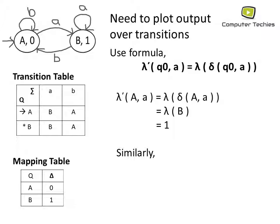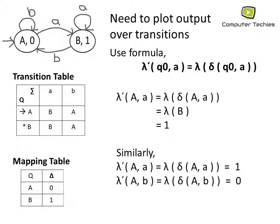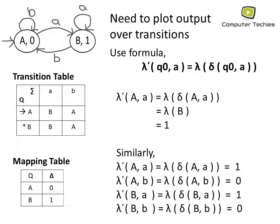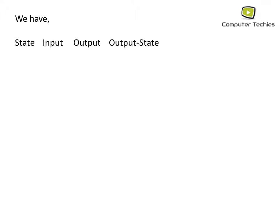Similarly, we can find all values: lambda-dash of (A, a) = 1, lambda-dash of (A, b) = 0, lambda-dash of (B, a) = 1, and lambda-dash of (B, b) = 0. This gives us the state, input, and output for all combinations.